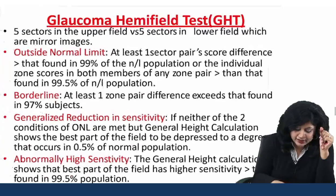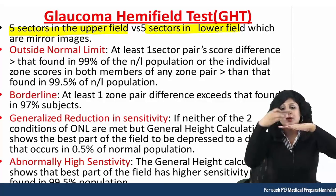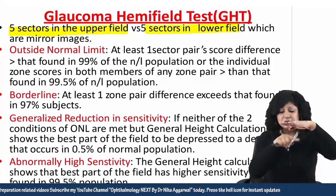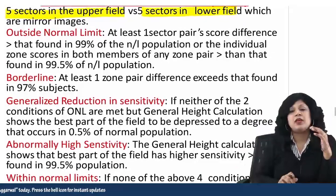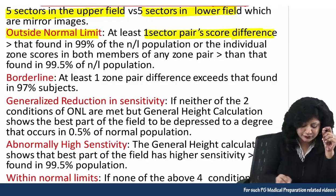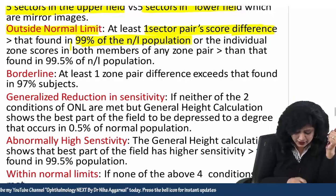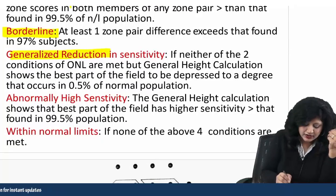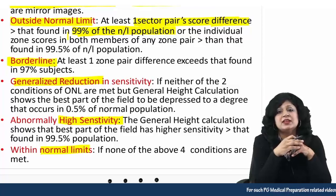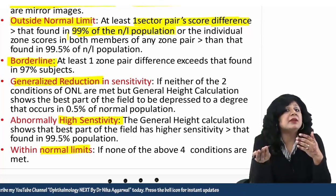Next is the glaucoma hemifield test. We take five sectors in the upper field versus five sectors in the lower field — exactly mirror images, that's why it's called a hemifield test. We can say it is outside the normal limits if at least one sector score has a difference found in more than 99% of the population. The result can be: outside normal limits, borderline, generalized reduction, abnormally high sensitivity, or within normal limits.